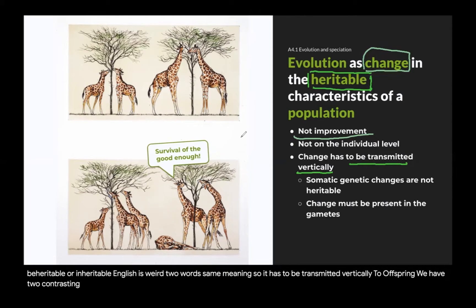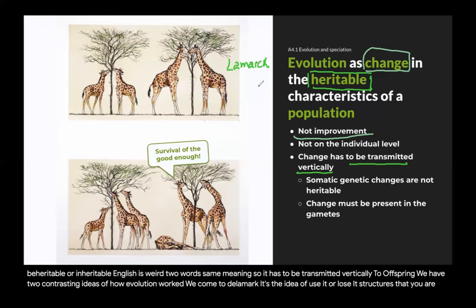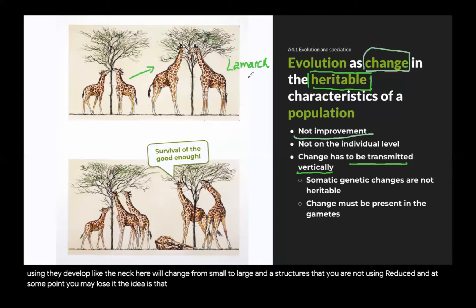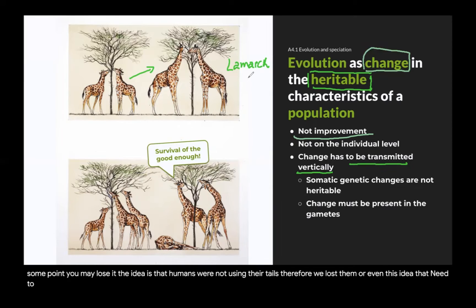In this image we have two contrasting ideas of how evolution worked. The one on top is by Vicomte de Lamarck — the idea of 'use it or lose it.' Structures that you are using develop, like the neck here changing from small to large, and structures you are not using will be reduced and eventually lost. The idea is that humans were not using their tails, therefore we lost them. Or that we don't need wisdom teeth, and many people are being born without them.